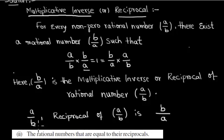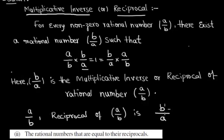That means when a rational number a/b is given, we can find out its reciprocal by interchanging its numerator to denominator and denominator to numerator.